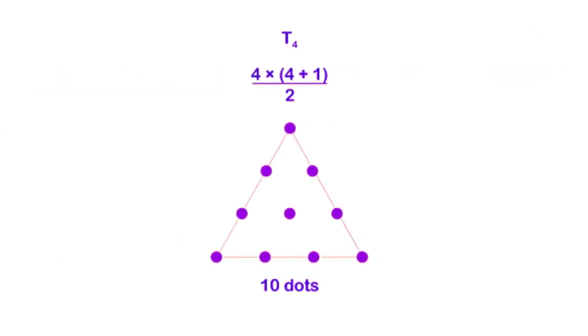For example, to find the fourth triangular number we plug in 4 for n giving us T4 is equal to 4 times 4 plus 1 which is 5 divided by 2 which is equal to 10.